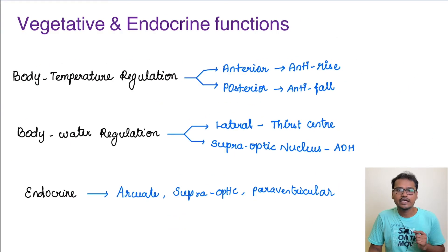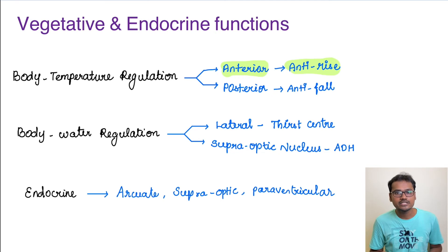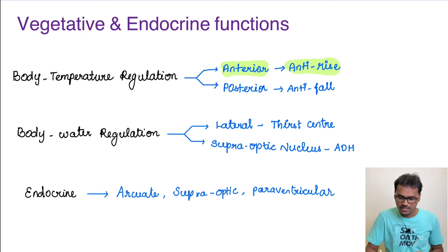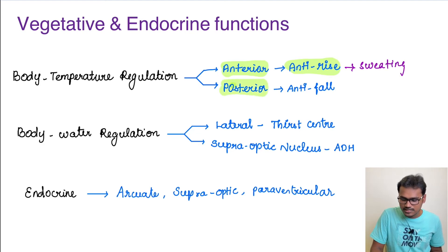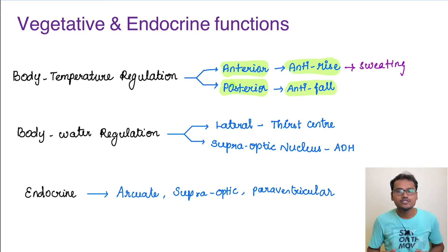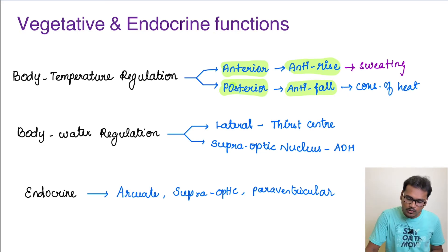The hypothalamus is also involved in body temperature regulation. The anterior group is called the anti-rise center — when body temperature rises, it causes sweating to dissipate heat. The posterior group serves as the anti-fall center — when temperature is falling, it conserves heat by reducing heat dissipation from the body.